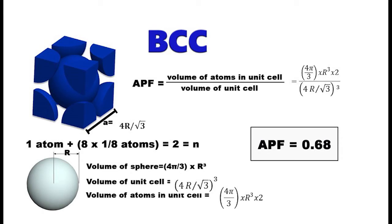We can see that our volume of a sphere is equal to 4π divided by 3 times r cubed. From this, we can calculate the volume of atoms in a unit cell. To do that, we simply multiply the volume of a sphere, 4π divided by 3 times r cubed, by the n value, which is equal to 2. We can also calculate the volume of a unit cell. To do this, we cube our a value, giving us 4r over square root of 3 cubed.